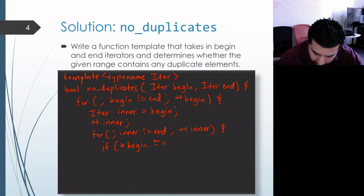And once again we're assuming that the element type actually overloads the equals equals operator, and we'll compare that to star inner. And if those two elements are equal then we do have a duplicate so we're going to return false immediately.